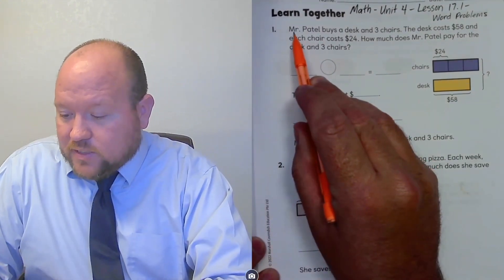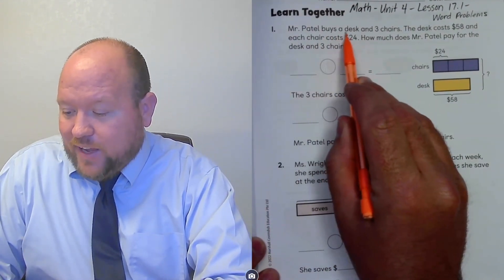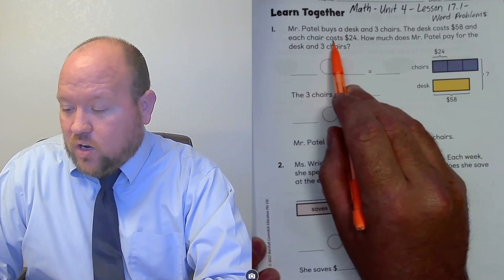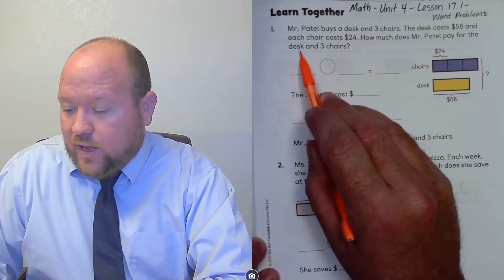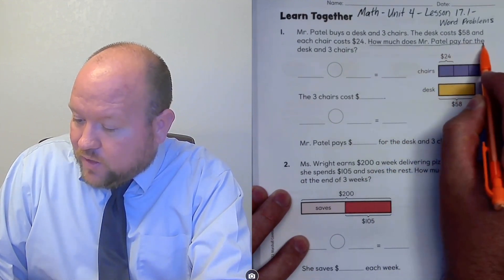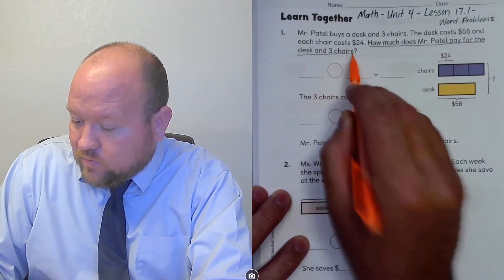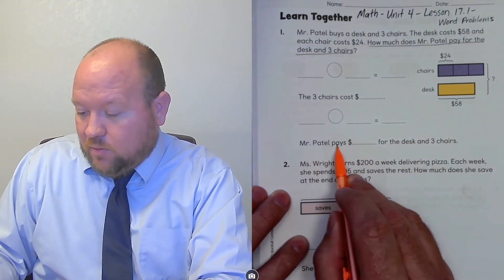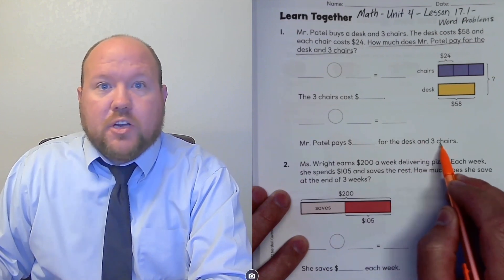Problem number one says: Mr. Patel buys a desk and three chairs. The desk costs $58 and each chair costs $24. How much does Mr. Patel pay for the desk and three chairs? So we want to underline the question: how much does Mr. Patel pay for the desk and three chairs? Next, we want to write our sentence — they've already done that for us: Mr. Patel pays blank dollars for the desk and three chairs.